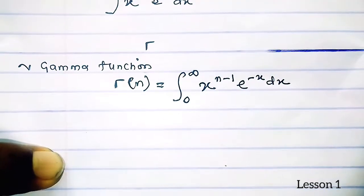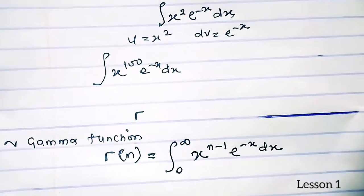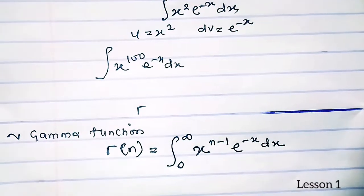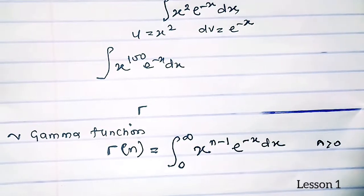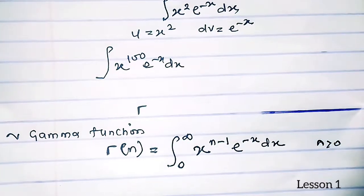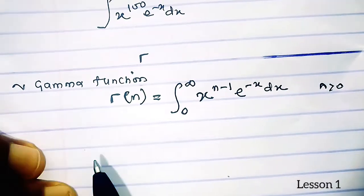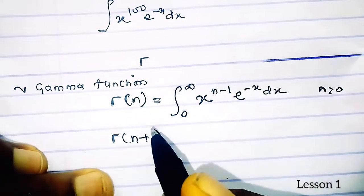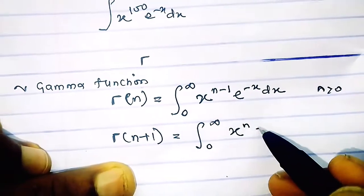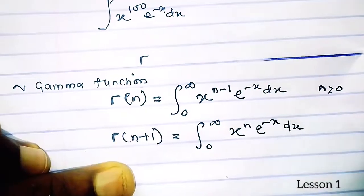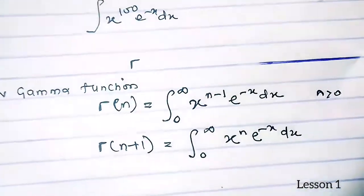We want to deduce a formula that we can use to solve complex integration by parts questions, where n is greater than 0. If we replace n with n plus 1, gamma of n plus 1 equals the integral from 0 to infinity of x raised to the power n times e to the minus x dx. These two integrals are actually the same in structure.